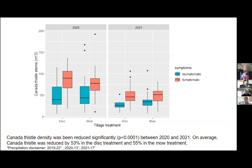Over the last two years, the area of the Canada thistle patches has expanded. However, the density of Canada thistle has declined and the abundance of the thistle rust pathogen has increased. This first graphic shows the differences in Canada thistle stem density between 2020 and 2021: on average, Canada thistle was reduced by 53% in the disc treatment and by 55% in the mowing treatment.